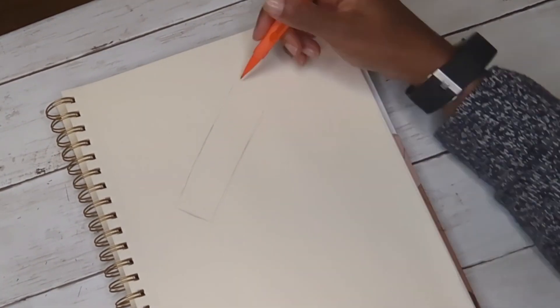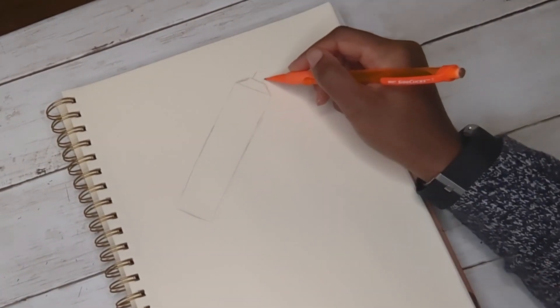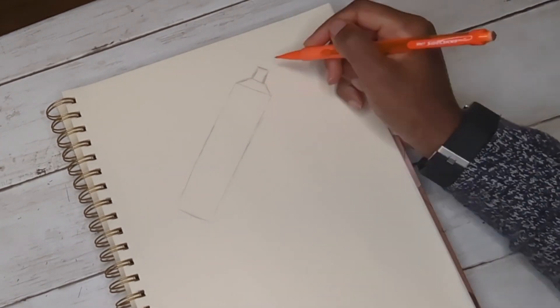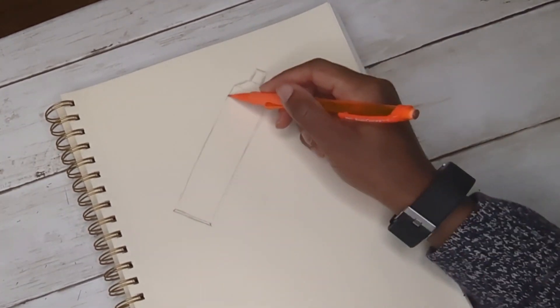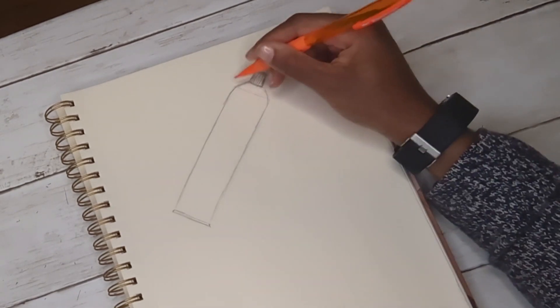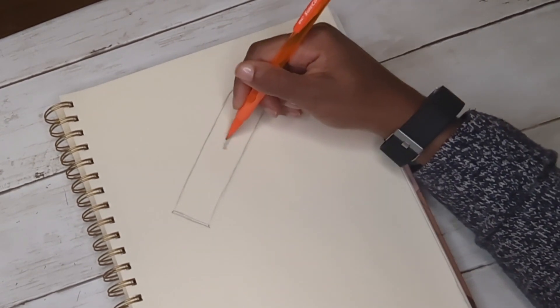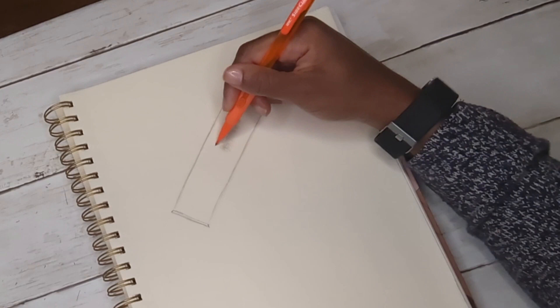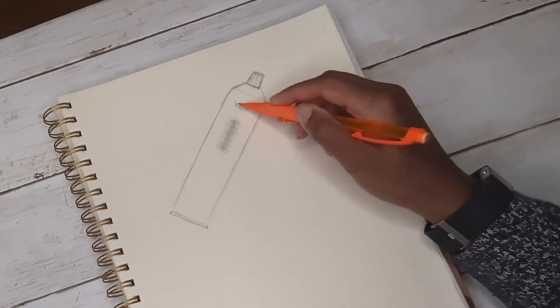In this video I'm practicing how to draw a tube of toothpaste from memory without looking at anything. The basic shapes I used in outlining the toothpaste were a rectangle, one trapezoid, and one square.